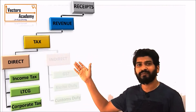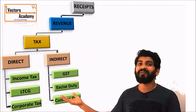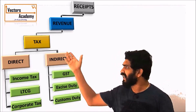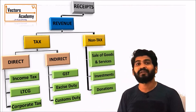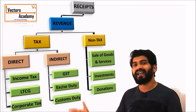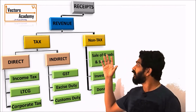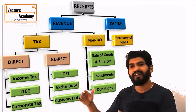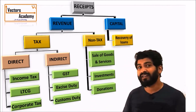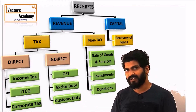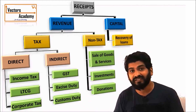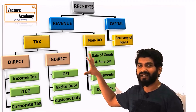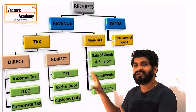Revenue receipts can be classified into taxes and non-tax receipts. Tax receipts include income tax, long-term capital gains, and so on — these are where the government gets income from. Non-tax receipts are products or services which the government sells. Capital receipts are where the government earns income from previous investments, such as repayment of loans given to organizations, or disinvestment in structures like railways.